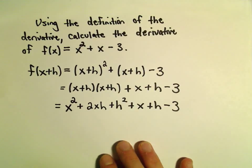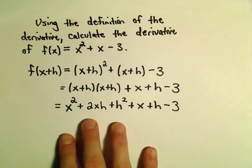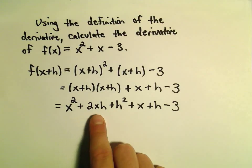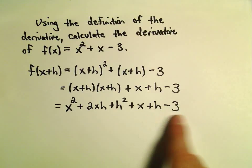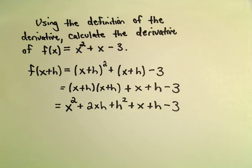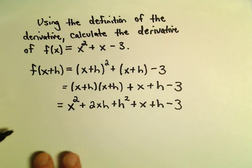Well, plus x plus h minus 3. And let's see, are there many like terms to combine here? I don't see many like terms left over to combine. We've got an x squared, we've got a 2xh, we've got an h squared, we've got an x, just a plain h, and then a number. So I think that's about as good as we can do for the moment.